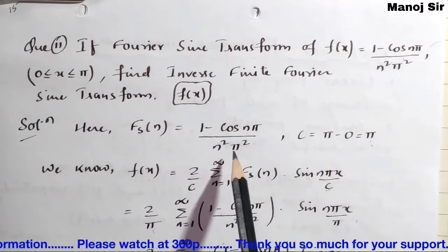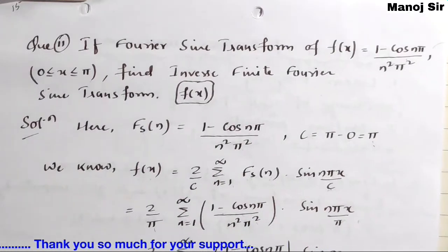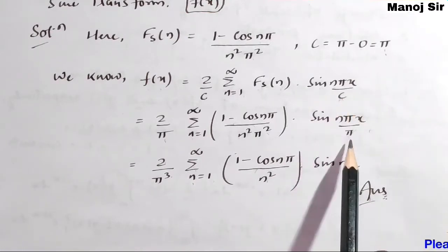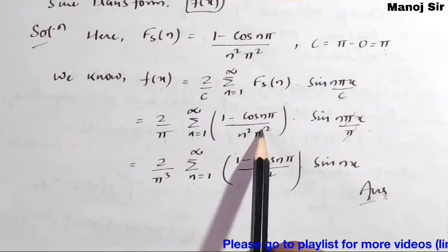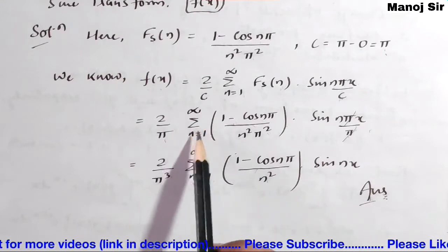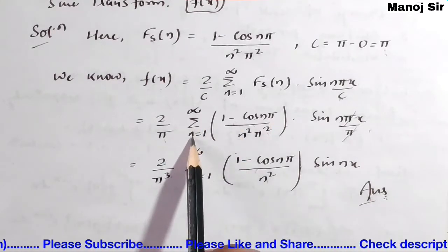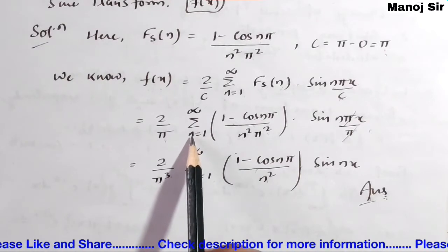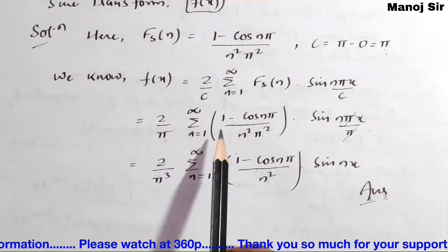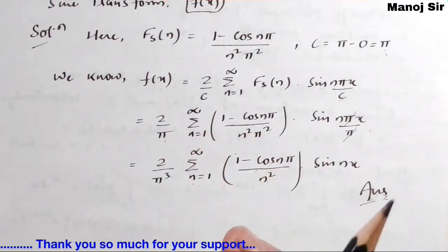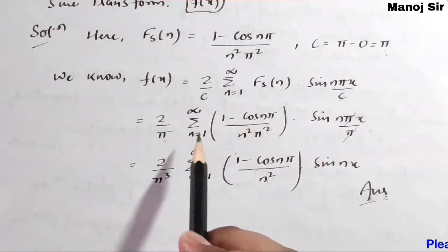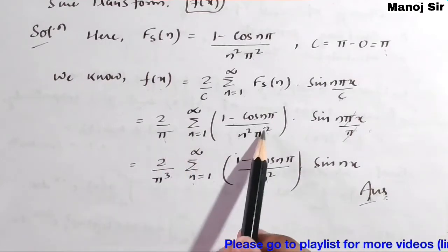Substituting Fs(n) = (1 - cos nπ) / (n² π²), and writing sin(nπx/c) as sin(nπx/π). The π in the denominator of sin(nπx/π) cancels with the π outside, giving sin(nx). We bring out the π² from Fs(n), but note we cannot take n outside the summation since n runs from 1 to infinity.